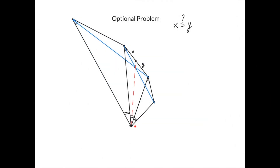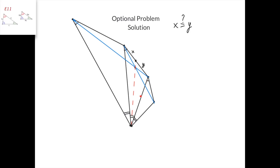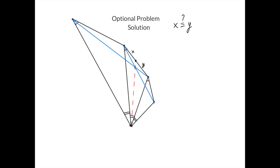This is the optional problem. We have a pentagon such that this angle equals this angle equals this angle, and that this angle equals this angle equals this angle. This segment is drawn, and this segment is drawn, and they intersect at this point, and then this red dashed line connects these points and intersects this segment at this point. We have to prove that this point is the midpoint of this segment. Notice that the three triangles we have here are similar because this angle equals this angle equals this angle, and this angle equals this angle equals this angle. Therefore, this point can be thought of as the center of spiral similarity that sends this segment to this segment, or this segment to this segment, or this segment to this segment.